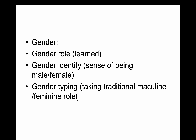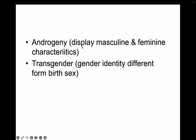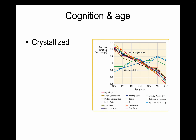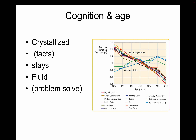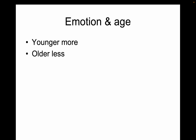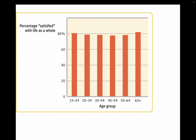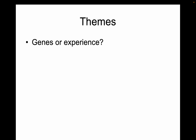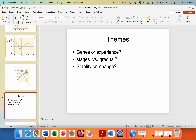Gender is learned. Gender identity is your sense of being male or female. Gender typing refers to stereotypes, like girls wear pink. Androgyny means having both male and female characteristics. As people age, crystallized knowledge — facts — stays the same, but fluid problem-solving skills get worse. Alzheimer's is dementia. Younger people have higher highs and lower lows, but old and young people are about the same in overall happiness.